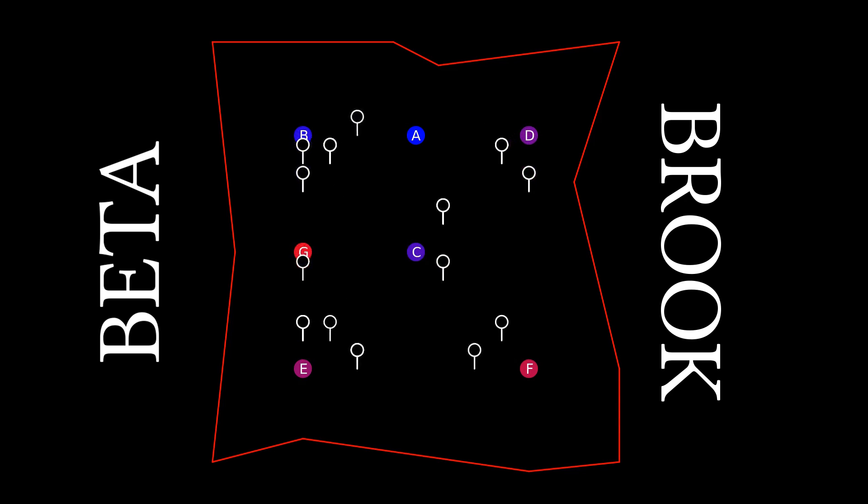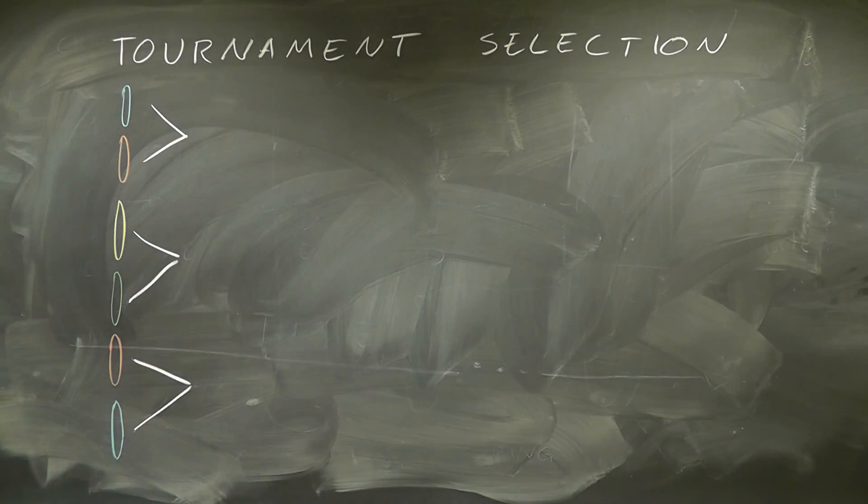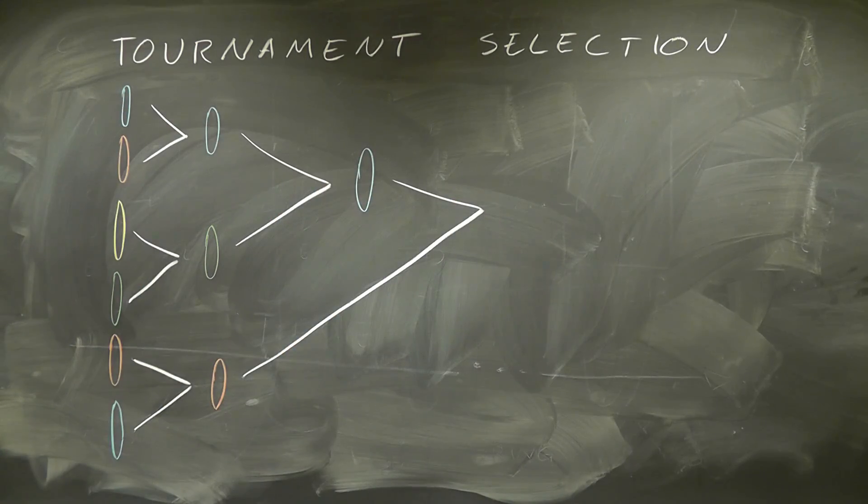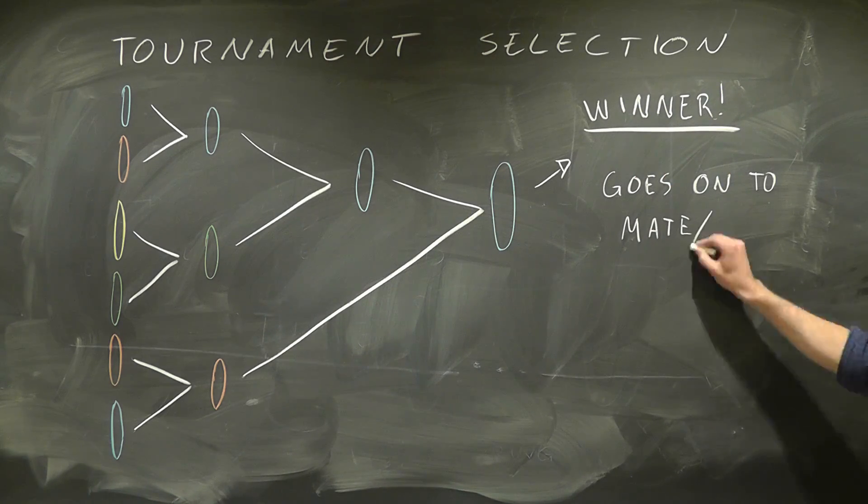We then select individuals based on their fitness, or the time it takes for them to return. There are many different ways to do this, but one common way is tournament selection, where we pick individuals randomly from a population and force them to fight in a tournament. We then choose a winner based on each participant's fitness.